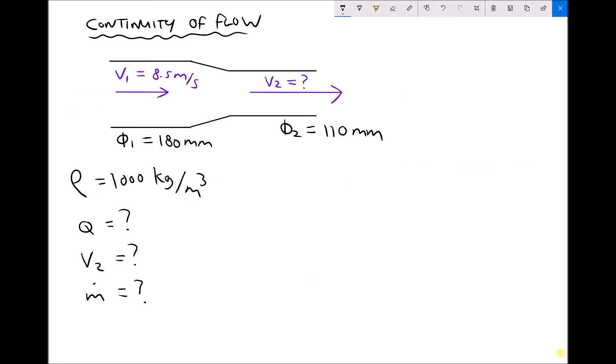So let's take a quick look at how this works in practice. So we have some information on our diagram. We have the diameters of the inlet and outlet and we have the velocity at the inlet. Now I've also given you a density of 1000 kilograms per meter cubed which is the density of fresh water. And the three things that I want us to find are the volume flow rate, V2 or the outlet velocity, and the mass flow rate.